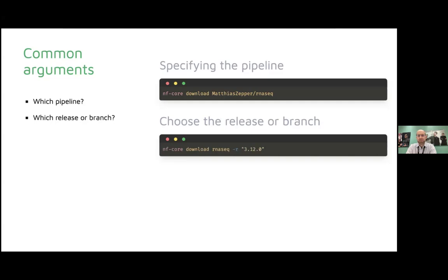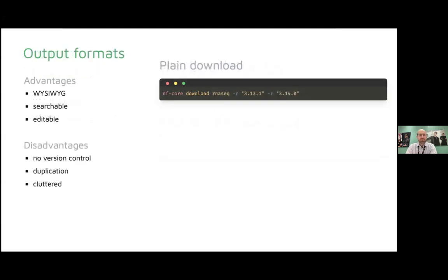When downloading, you usually want a particular release or version. You specify this with the -r flag (for revision), for example version 3.12.0. It doesn't have to be a released version — you can also use a branch like dev to test the current development version. You can even specify multiple revisions if you want to compare two versions and how they affect your results.